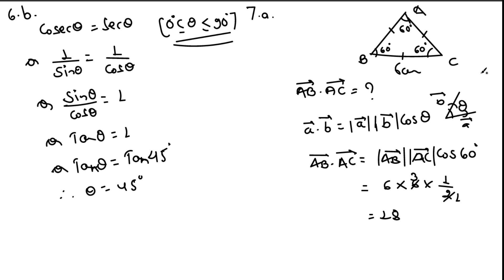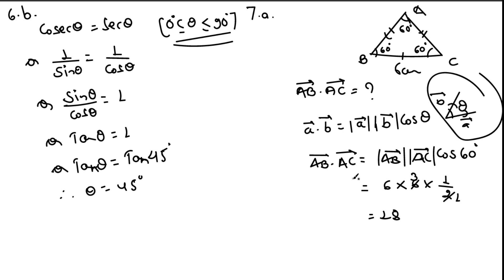Question 7a: in triangle ABC, AB = AC = BC = 6 cm, so the triangle is equilateral with each interior angle = 60°. Find the scalar product of vector AB and vector AC. By the definition of scalar product: A⃗ · B⃗ = |A⃗||B⃗| cos θ. So AB⃗ · AC⃗ = |AB| × |AC| × cos 60° = 6 × 6 × (1/2) = 18.